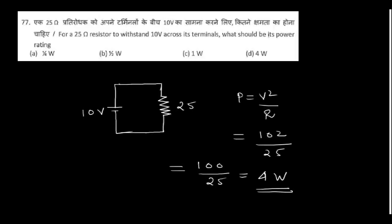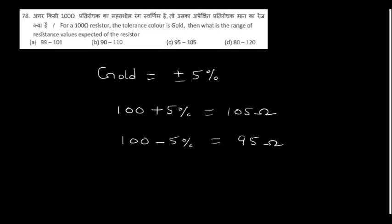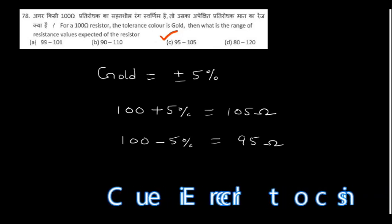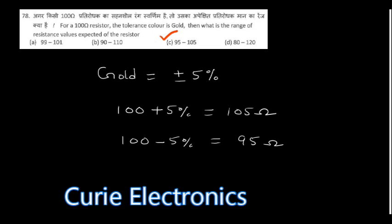For a 20 ohm resistor to withstand 10V across its terminals, the minimum power rating should be 4W (calculated as V²/R = 100/20 = 5W, so 4W minimum). For a 100 ohm resistor with gold tolerance (±5%), the expected range of resistance is 95 to 105 ohms — 5% of 100 is 5, so add and subtract to get 95 to 105.